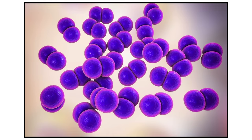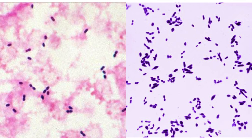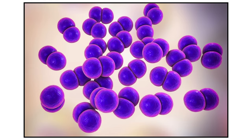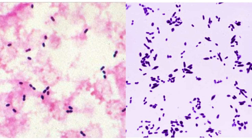Diplococci means two cocci that occur together. You see this pairing — diplococci, two cocci — and they can occur in chains or spaced out a bit. This is the image you'll probably see on your exam: diplococci, very high yield. Other things to know about Strep pneumoniae: they're bile soluble, they are facultative anaerobes, and this pathogen is typically found in the nasopharynx. The highest yield points so far are the flow diagram, optochin sensitivity, lancet-shaped diplococci, and recognizing the histological image.